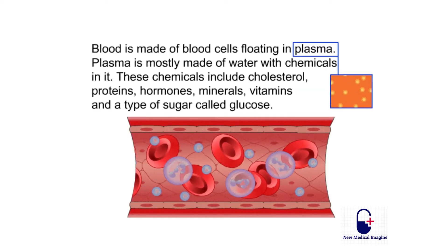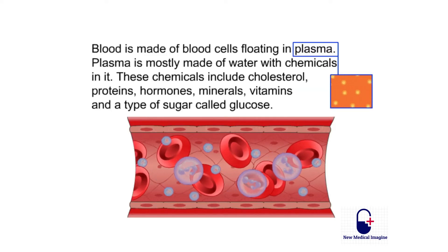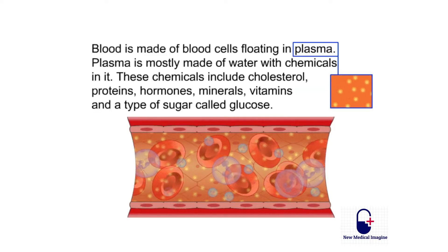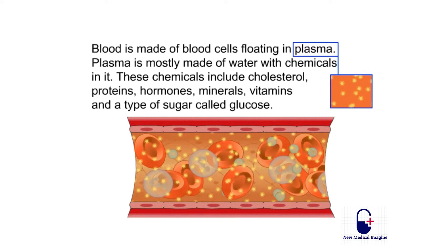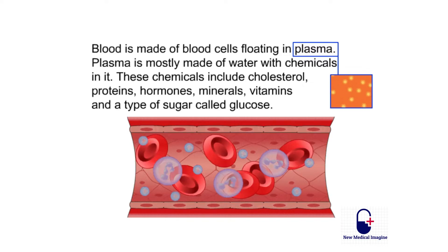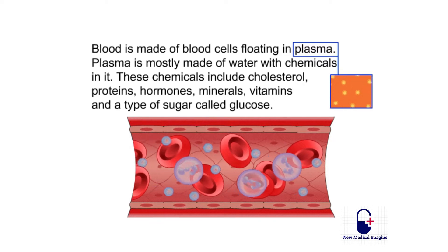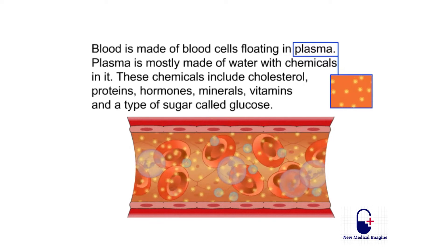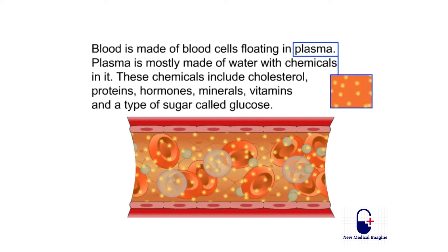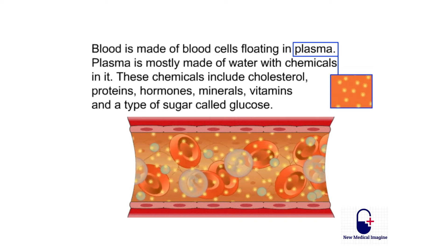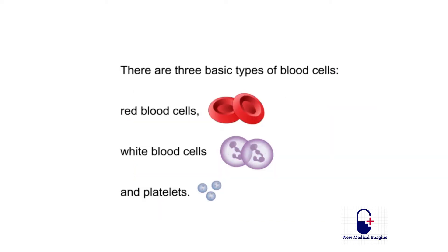Blood is made of blood cells floating in plasma. Plasma is mostly made of water with chemicals in it. These chemicals include cholesterol, proteins, hormones, minerals, vitamins, and a type of sugar called glucose. There are three basic types of blood cells: red blood cells, white blood cells, and platelets.